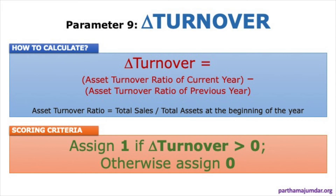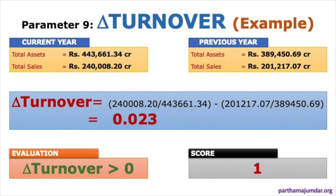The ninth and last parameter is Delta Turnover, calculated as the asset turnover ratio of the current year minus the asset turnover ratio of the previous year. Asset turnover ratio = total sales divided by total assets at the beginning of the year. If Delta Turnover > 0, assign a score of 1; otherwise 0. Putting the gathered figures into the formula, Delta Turnover = 0.023, which is greater than 0, so Gujarat Alkalies scores 1 on Delta Turnover.